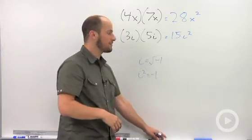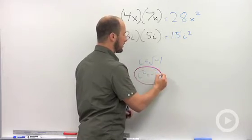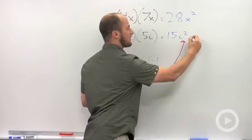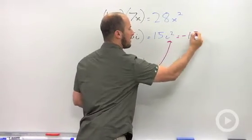So using a simple substitution, we know that i squared is equal to negative 1. We can plug this in right here and this ends up giving us negative 15.